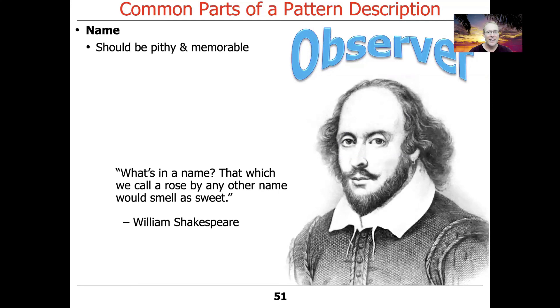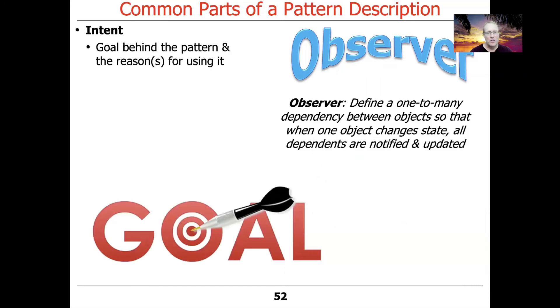One of the first elements in a pattern form is the name, and of course the name should be pithy and memorable. So observer. It's very clear when you hear observer, if you know anything about this pattern, that it's something that will observe the results of changes to some subject. That's really concise, really clear, rolls off the tongue, descriptive, easy to remember. Then there's also something called the intent, which briefly describes the goal behind the pattern and the reason for using it. In this particular case for the observer, its intent is to define a one-to-many dependency between objects so that when one object changes state, all the dependents are notified and updated.